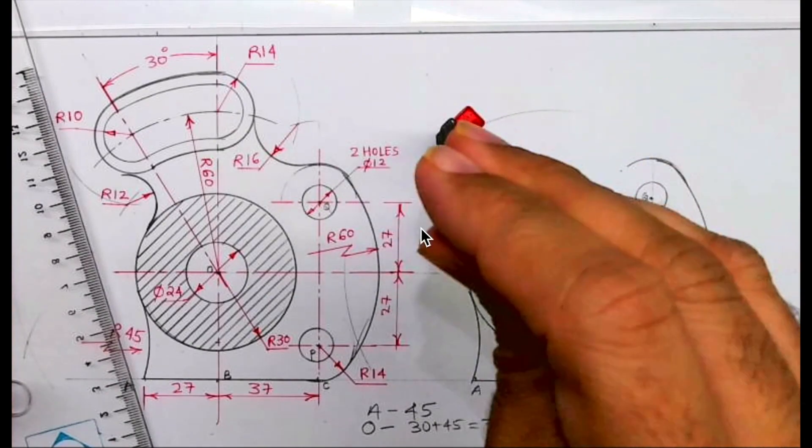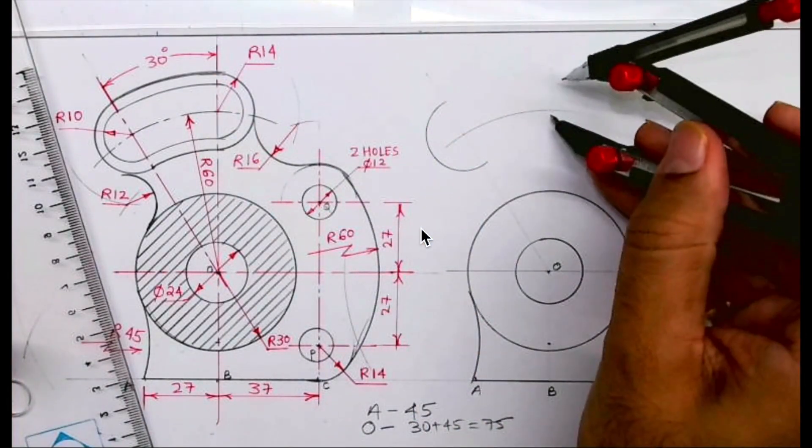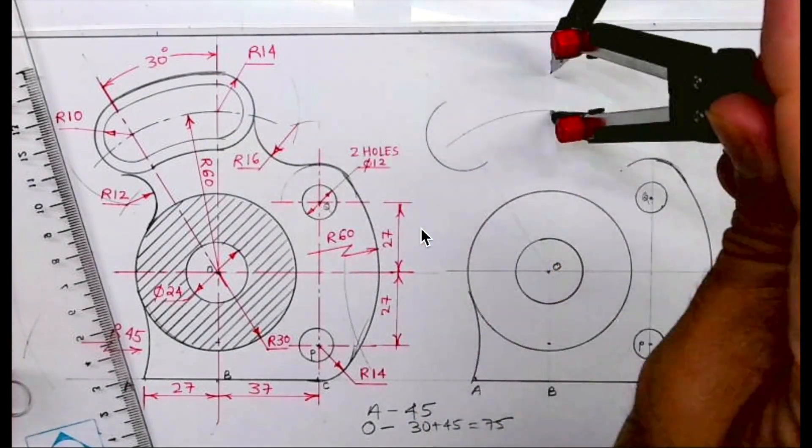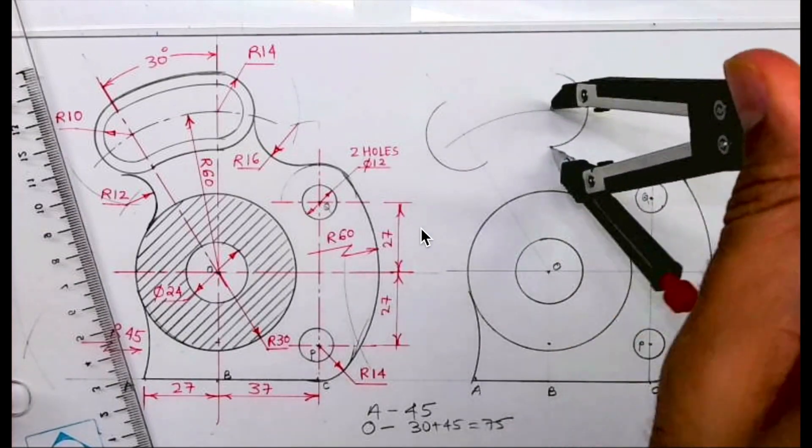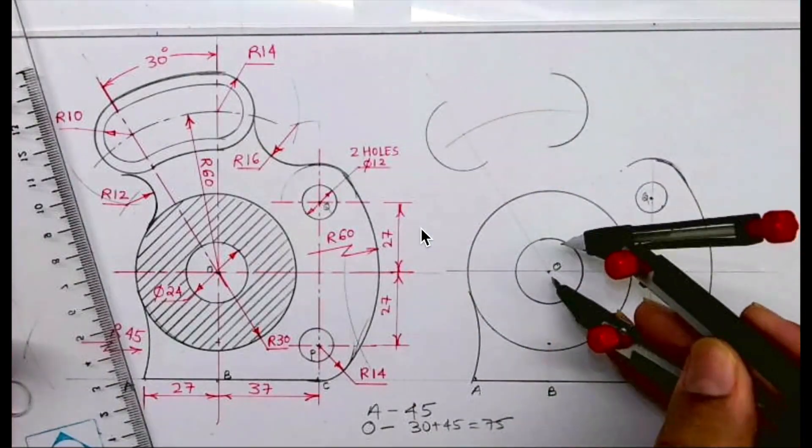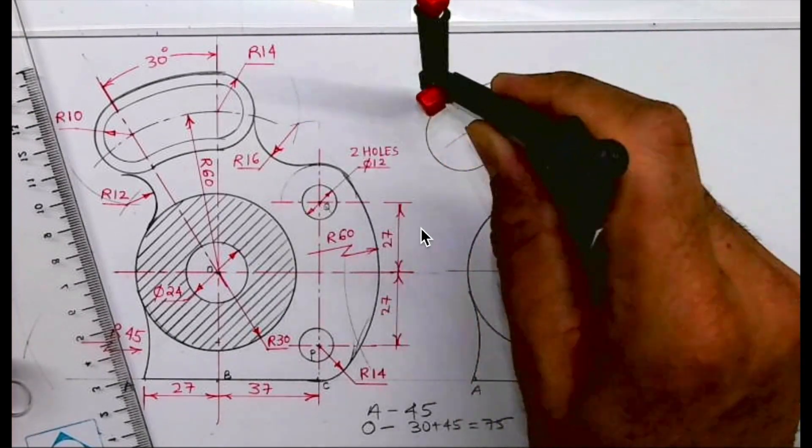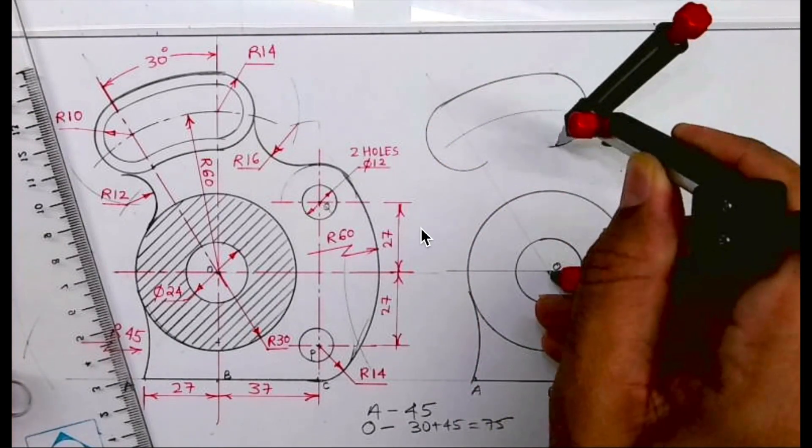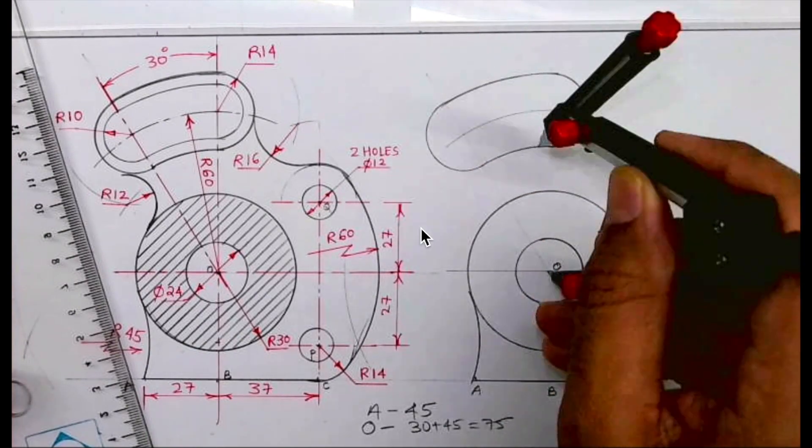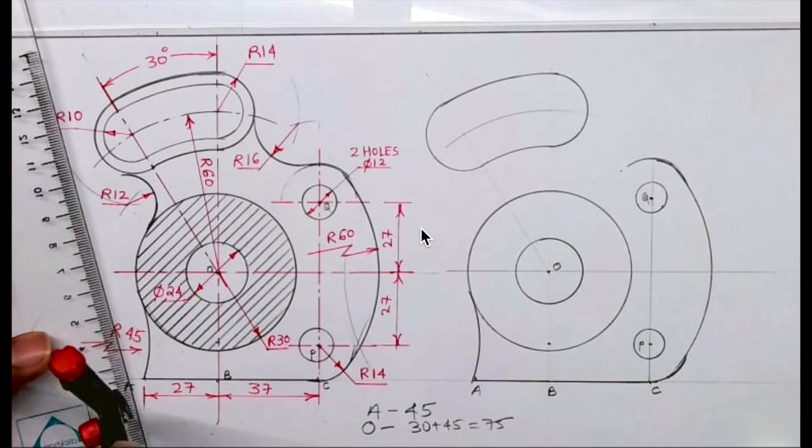See, from here I will draw radius 14. Same from here. This is the intersection of radius 60 and the vertical line. We can join this. Same way we can draw radius 10 inside.